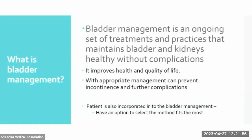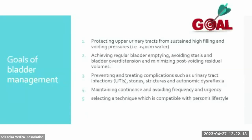The patient is incorporated into the bladder management because patients have the option to select the method that fits them best. Bladder management itself cannot fix all problems caused by spinal cord injury, but it can help manage them to improve health and quality of life. The goals are: protecting the upper urinary tract from sustained high filling and voiding pressures; achieving regular bladder emptying; avoiding stasis, bladder overdistension, and minimizing post-void residual volume; preventing and treating complications such as UTIs, stones, strictures, and autonomic dysreflexia; maintaining continence and avoiding frequency and urgency; and selecting a technique compatible with the patient's lifestyle.